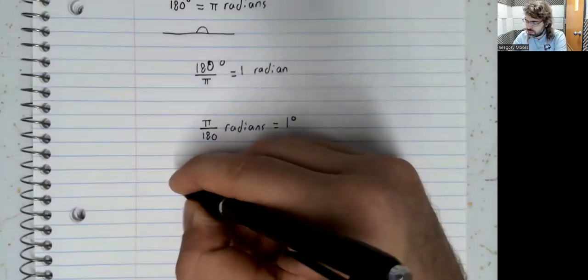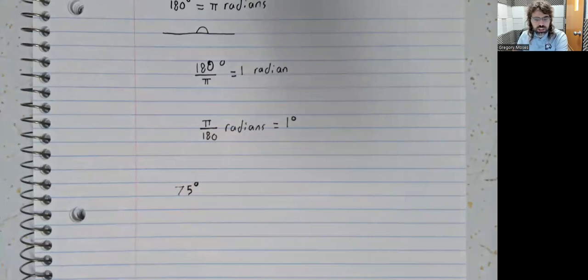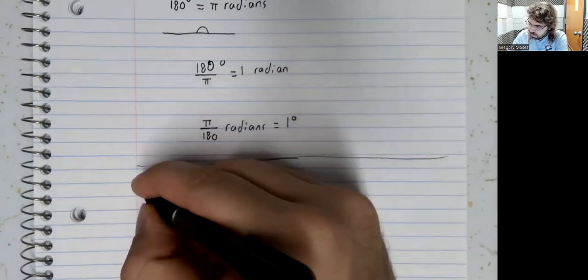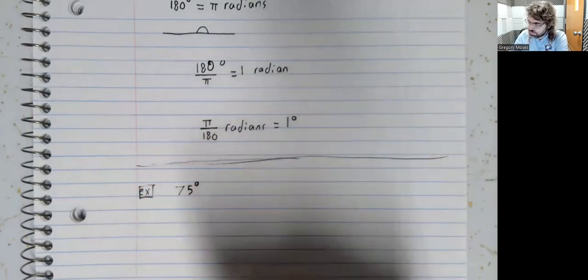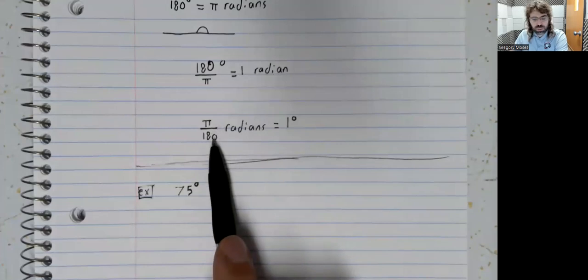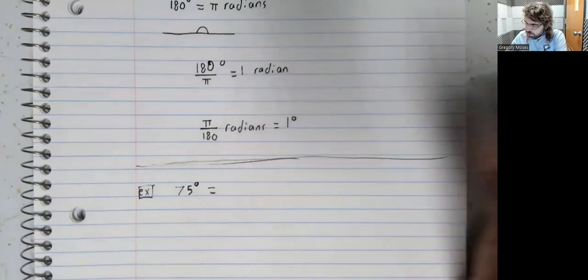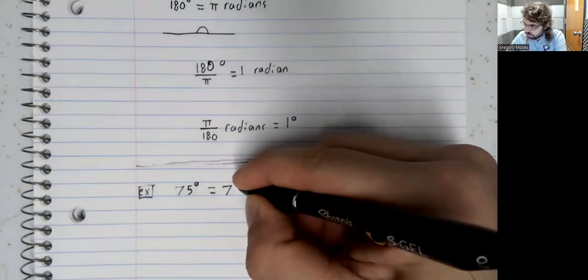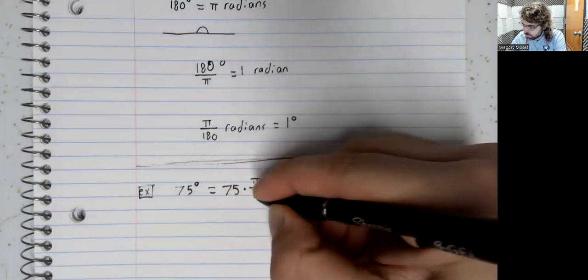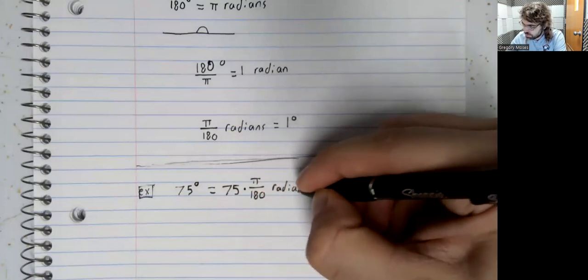Say you have 75 degrees and you want that in radians. Well, 1 degree is pi over 180 radians, so 75 degrees is 75 times as many radians.